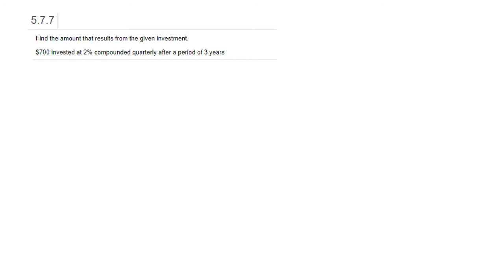So first up, find the amount that results from a given investment. We have two different formulas for computing compound interest. One for when interest is computed in discrete steps, in other words at specific points in time, and one when it is computed continuously, in other words you're always earning interest.